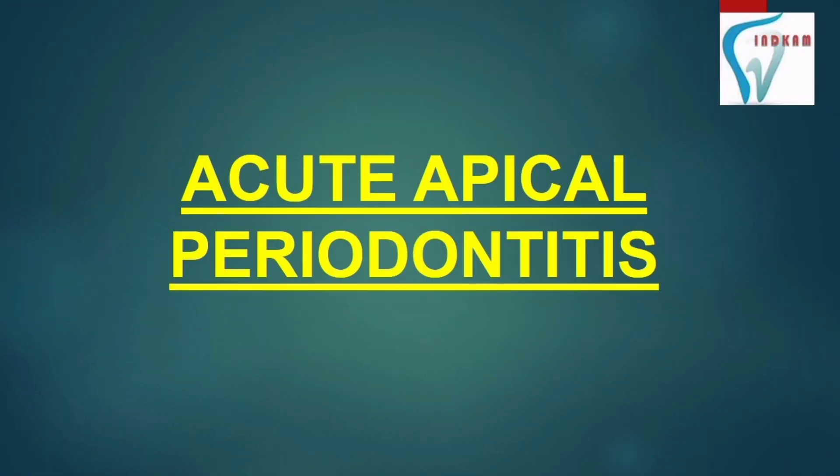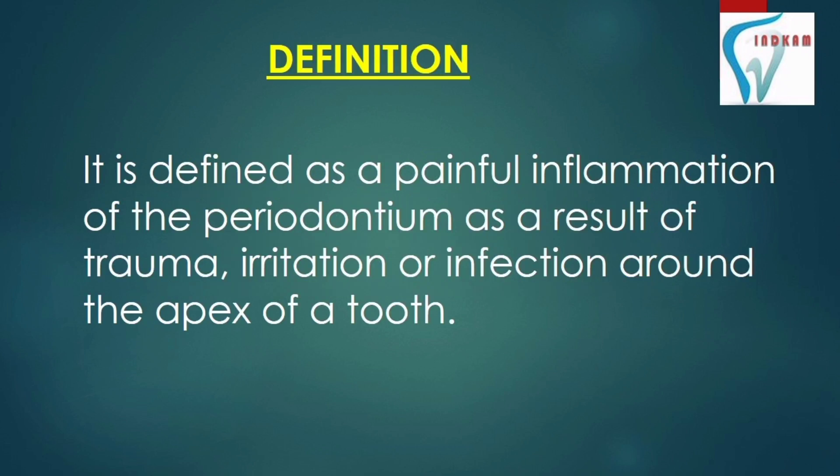Today we are going to learn about acute apical periodontitis. It is defined as a painful inflammation of the periodontium as a result of trauma, irritation, or infection around the apex of a tooth.